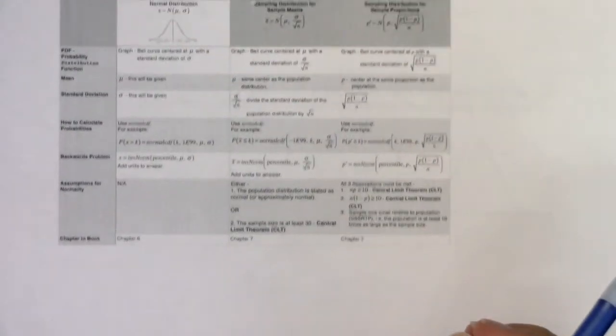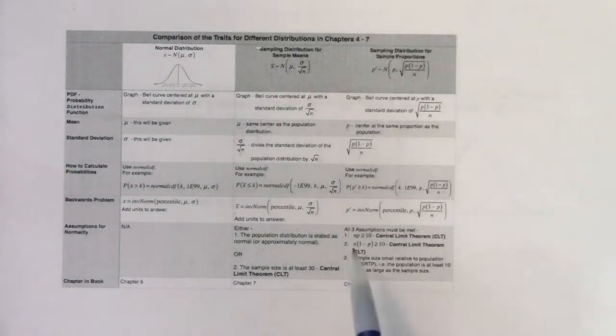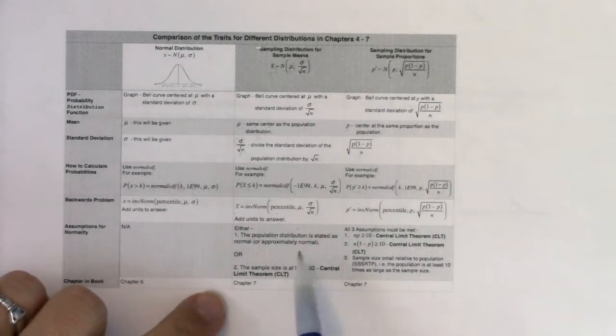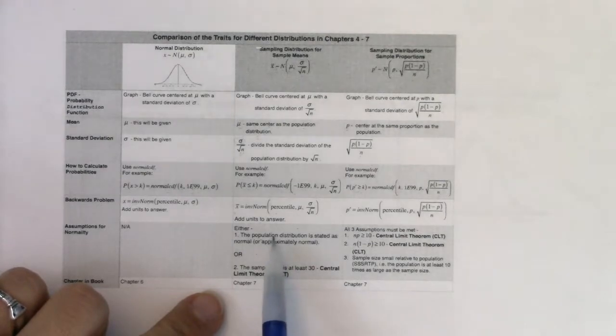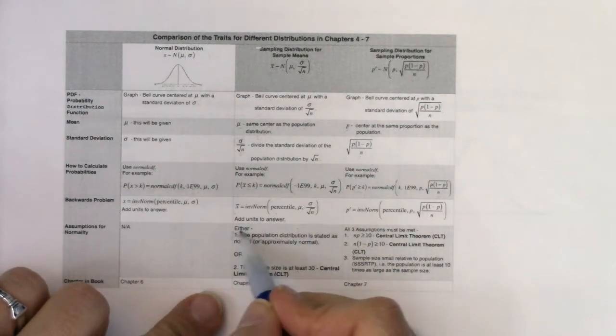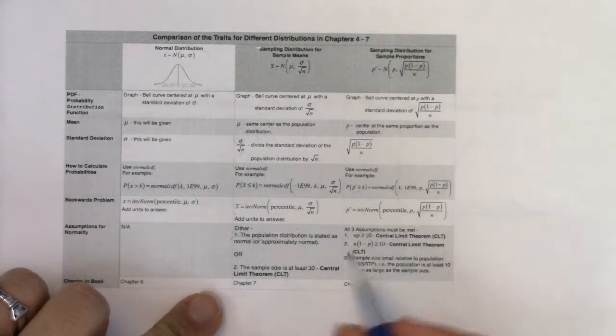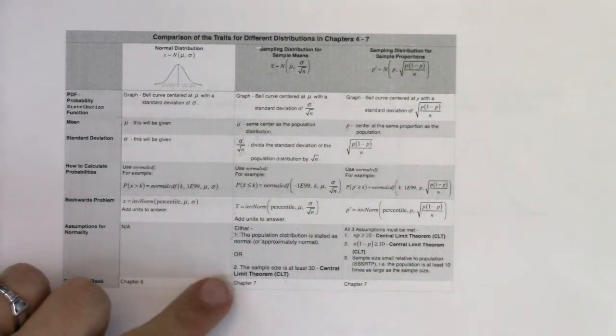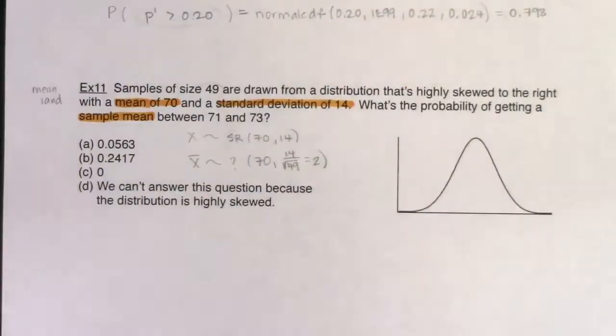So was the population distribution stated as normal? No, it was actually specifically stated as skewed right. So in this case, I did not meet assumption number one, but the central limit theorem kicked in because the sample size was 49, and 49 is greater than or equal to 30. So I hit the central limit theorem. Great. So I can now drop the N here.